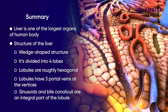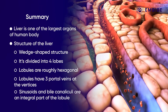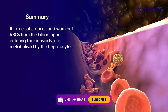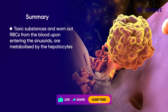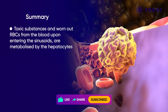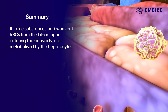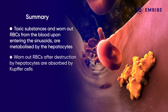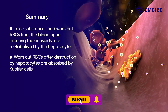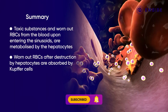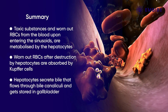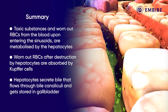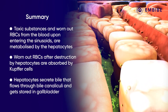Sinusoids and bile canaliculi are integral parts of the lobule. When toxic substances and worn-out RBCs present in the blood flow into the sinusoid, the toxic substances are absorbed by the adjoining hepatocytes and metabolized within them, and the worn-out RBCs are absorbed by the Kupffer cells after destruction. Furthermore, hepatocytes secrete bile which flows through the bile canaliculi and gets stored in the gallbladder.